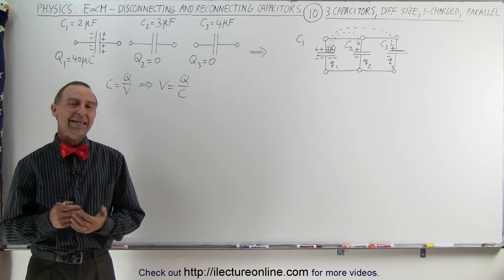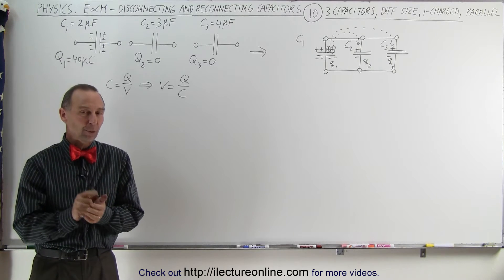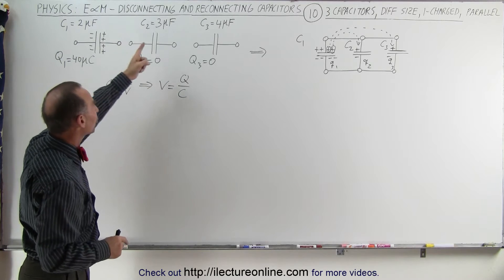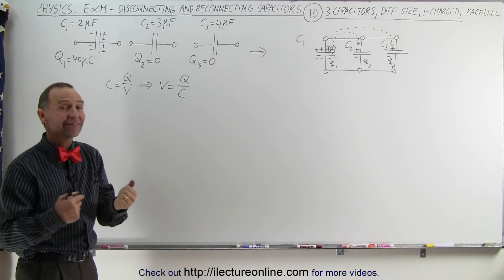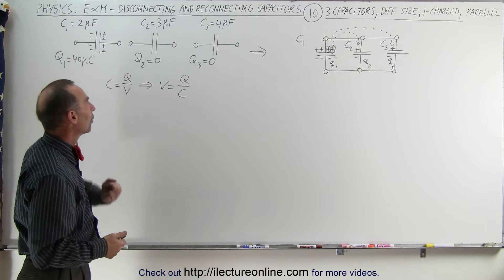Welcome to ElectronLine. Here in this example we have the same setup as we did in the previous example with one difference. In the previous example all the capacitors were the same size. In this example they're all different size: 2, 3, and 4 microfarads.